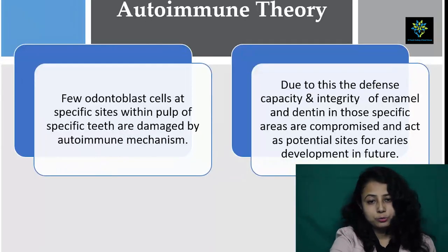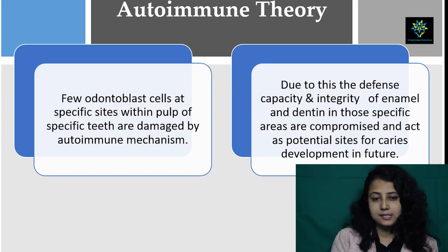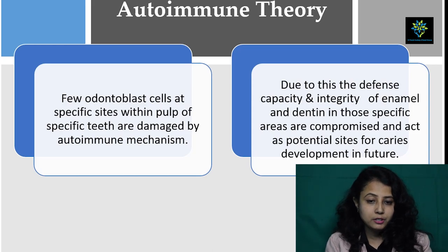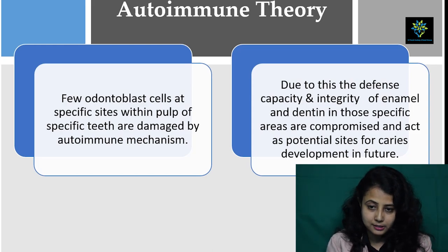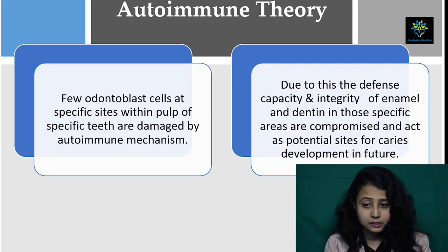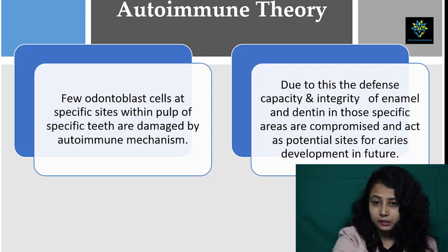Then comes the autoimmune theory. Here they said a few odontoblast cells at specific sites within the pulp of specific teeth are damaged by an autoimmune mechanism. Due to this, the defense capacity and integrity of enamel and dentine in those specific areas are compromised and act as potential sites for caries development in future.